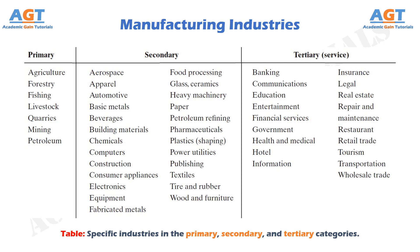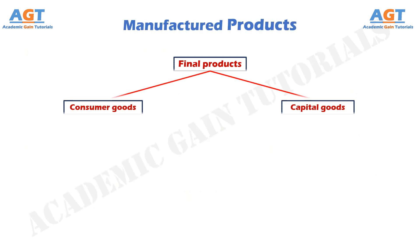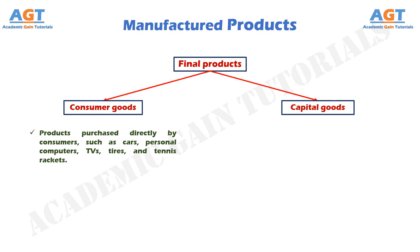Final products made by the manufacturing industries can be divided into two major classes: consumer goods and capital goods. Consumer goods are products purchased directly by consumers, such as cars, personal computers, TVs, tires, and tennis rackets.